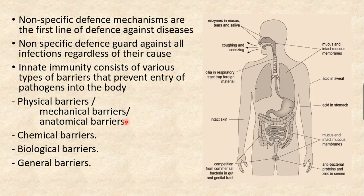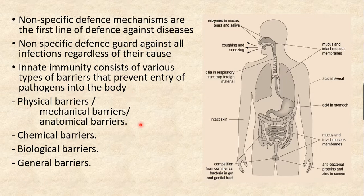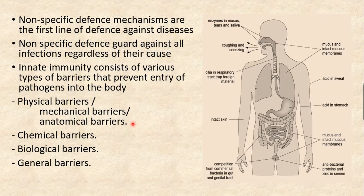The barriers of innate immunity include: physical barriers (also called mechanical or anatomical barriers), chemical barriers, biological barriers, and general barriers. Here, we are going to mainly discuss the physical or mechanical barriers, which are also considered anatomical barriers.